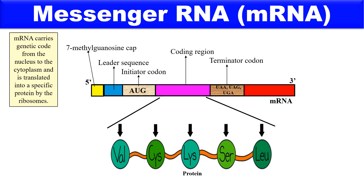After the coding region, we have the terminator codon region with stop codons UAA, UAG, and UGA, which terminate protein synthesis. Following the termination codon is a non-coding region, and finally at the three-prime end we have the poly-A tail — the polyadenyl tail — with generally 200 to 250 adenyl residues added. This three-prime poly-A tail is also present in eukaryotic RNA. Generally, mRNA consists of 900 to 1500 nucleotides.